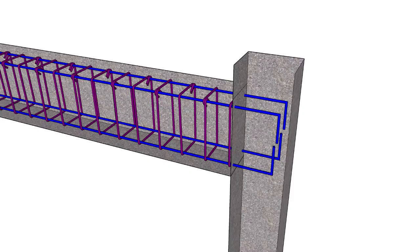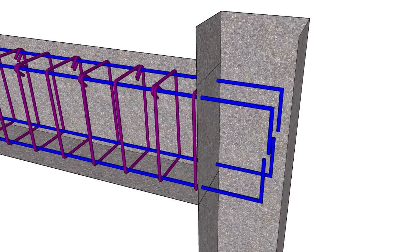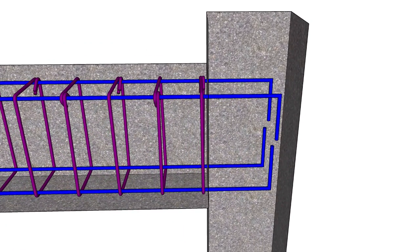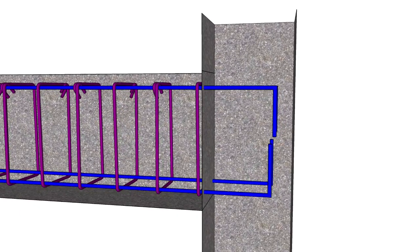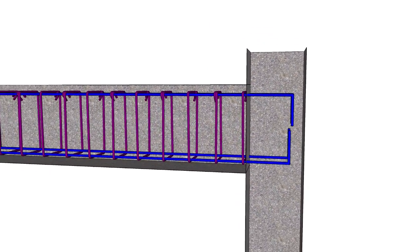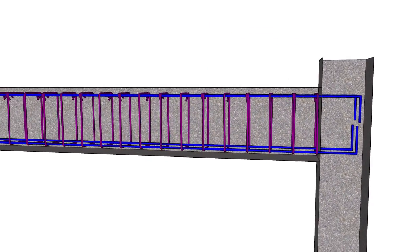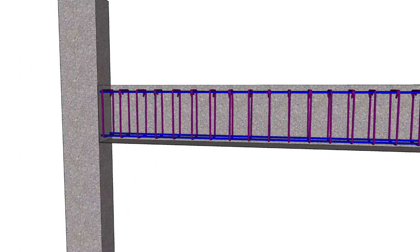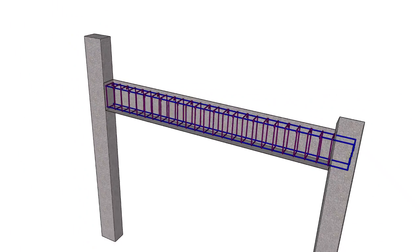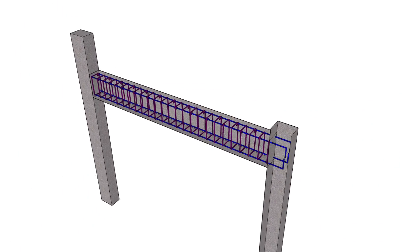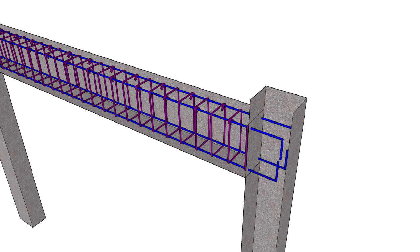The development length is essentially the length of a reinforcement bar or rebar that needs to be embedded or extended into a concrete element. This is done to make sure there is a proper bonding and the transfer of stresses between the steel reinforcement and the surrounding concrete. It is a crucial factor in achieving the desired strength and load carrying capacity of a structure.